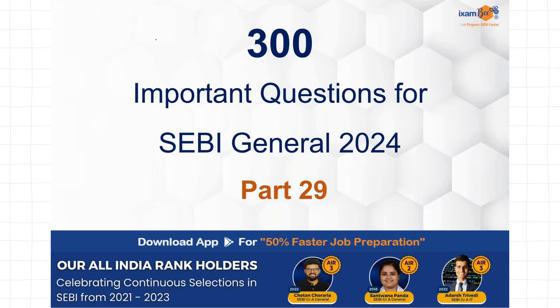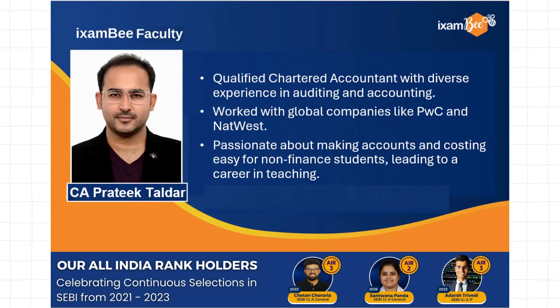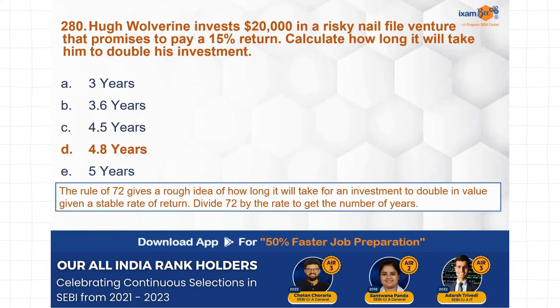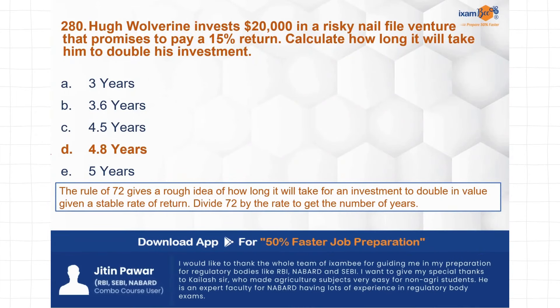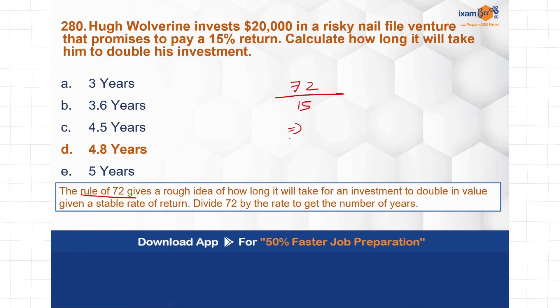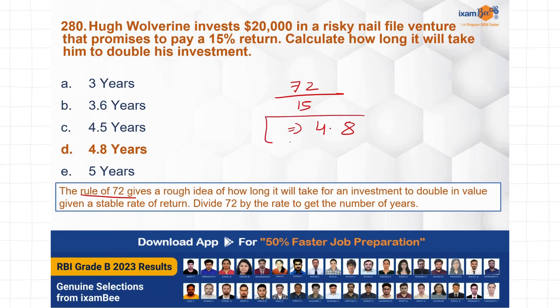Hello everyone, welcome to the 29th part of 300 important MCQs for SEBI General Examination. In the last question we were discussing about the Rule of 72 — this is a very important rule in finance. If you divide 72 by your rate of interest, you get the time in which your money will double. 72 divided by 15 equals 4.8 years, so approximately your money doubles in 4.8 years.